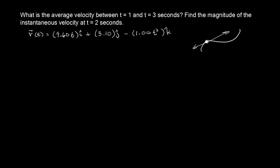Let's say you didn't know how to take the derivative. Instead, what you do is take the average rate of change. Basically, that means you're trying to find the slope at a particular point but you didn't know how to take the derivative. So what you would do is make two other points and try to approximate what the slope is going to be.